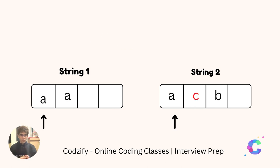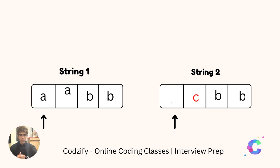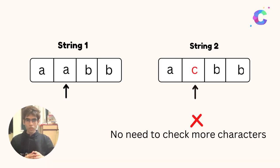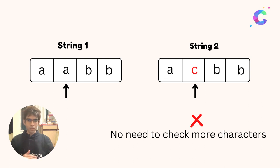Here you can see C in string2 is not present in string1. We check the first element of both the strings, which is A and A — same. We increment the pointer to the next element. Now here, as you can see, C and A are not matching. So we do not need to check more characters in the string, and we can conclude that both the strings are not anagrams of each other.